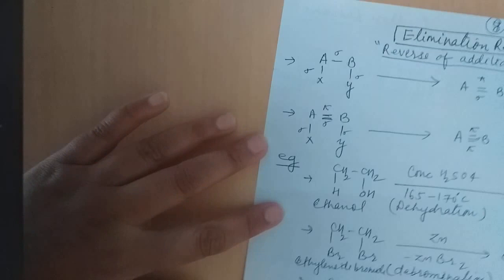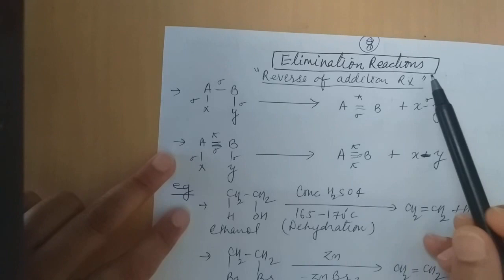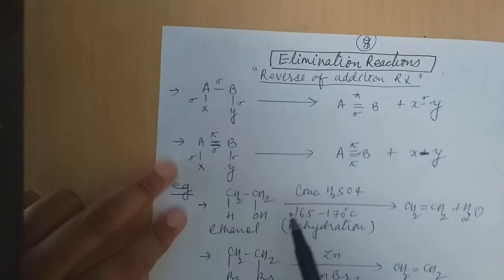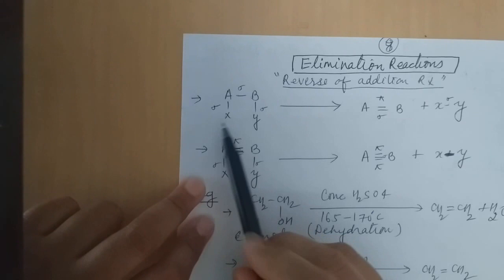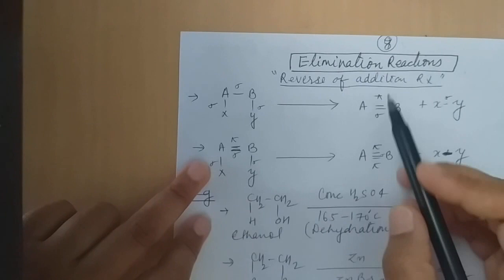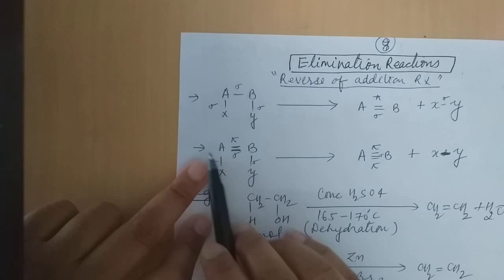When we studied the addition reaction, the product formation was there. Now we are doing Elimination Reaction. According to its name — Elimination — some small molecules are eliminated during the reaction. It is just the reverse of the addition reaction. We have sigma bonds which are broken and pi bond formation occurs — in two sigma bonds there is a pi bond formation. So we call it Elimination Reaction.